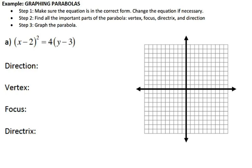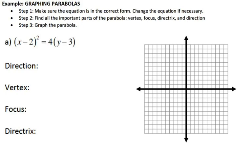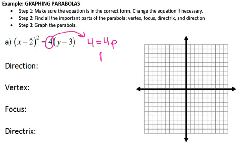So here's the first one. I'm going to make sure the equation is in the correct form — where you have that single quantity squared and then the other expression on the right side. That first equation is already set to go. My x is being squared, which means my parabola is opening up or down. I'm going to take this number in front of my parenthesis and set it equal to 4p. So I'm using that to solve for p. Once I solve for p, I get p equals 1. If p is positive, the direction is up; if p is negative, the direction is down. So I know this parabola is opening up.